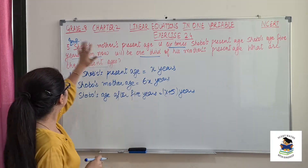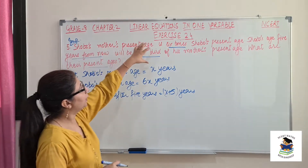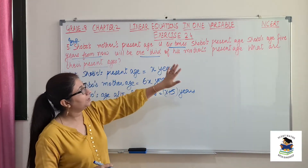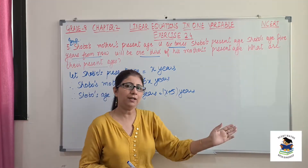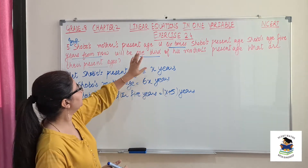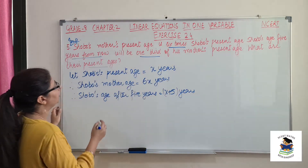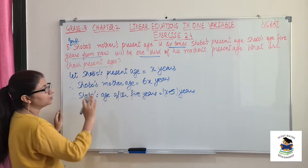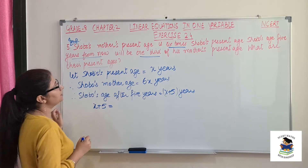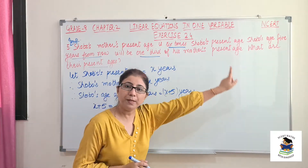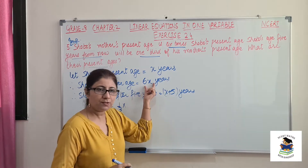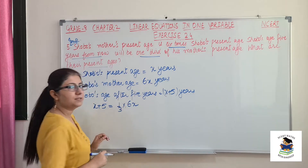Shobo's age 5 years from now will be one third of his mother's present age. The relation is with the present age only. If her age was also after 5 years, we would add 5 years to that as well, but here we need only mother's present age. So: Shobo's age after 5 years (x plus 5) equals one third of mother's present age (6x).